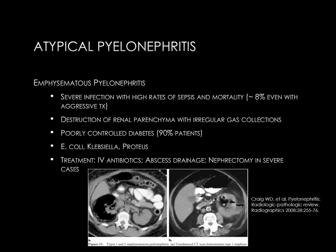At the bottom of the slide, you see two different patients with emphysematous pyelonephritis. On the left image, the patient's right kidney is basically replaced with numerous gas collections and destruction of the renal parenchyma. On the right image, the patient's right kidney has extension of gas collections from the renal collecting system into the parenchyma and into the lateral perinephric fat.